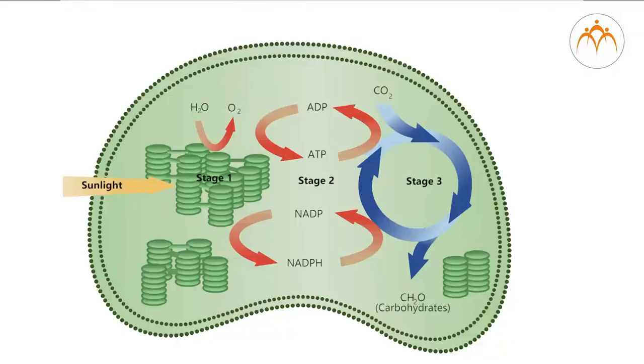Just like the mitochondrial matrix, the stroma of chloroplast also contains a double-stranded circular DNA, 70S ribosomes, and enzymes which are required for the synthesis of carbohydrates and proteins. The main function of the chloroplast is to serve as the site of photosynthesis.